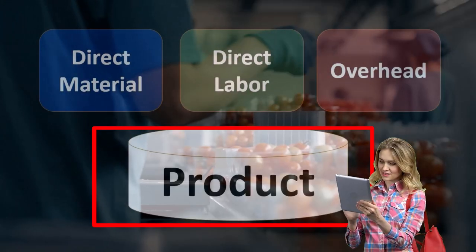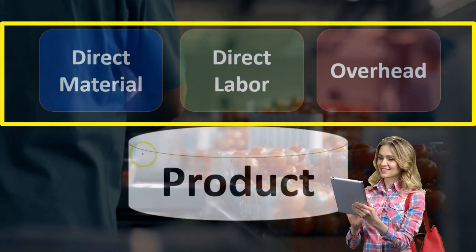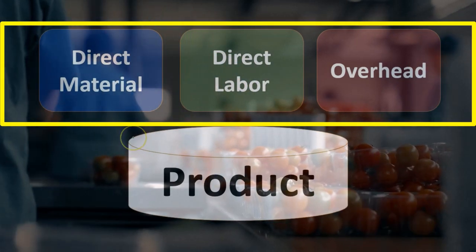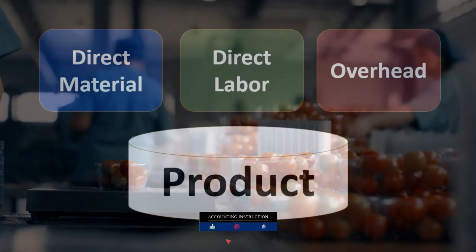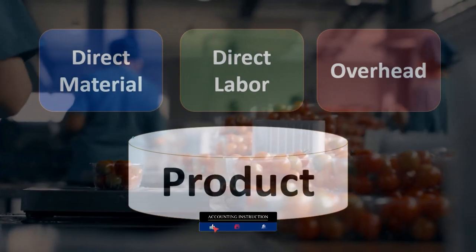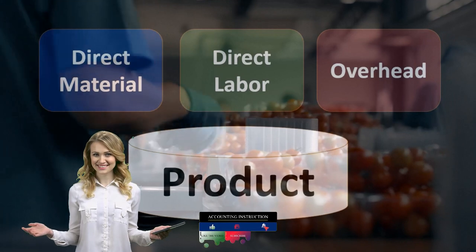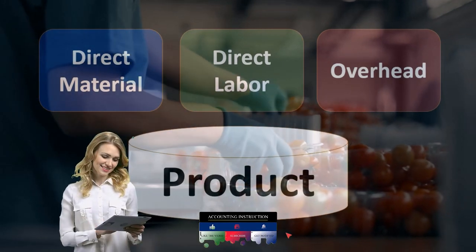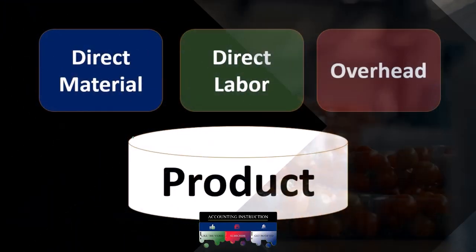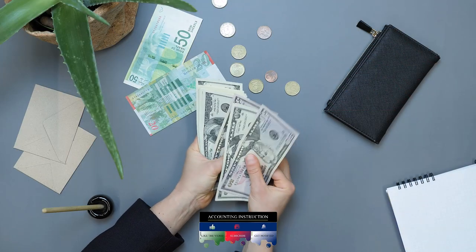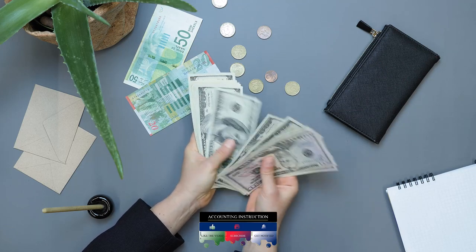When considering production costs, we always think about direct materials, direct labor, and overhead. This should always come to mind when we think about production. Anytime we think about inventory, whether we make it or whether it be made someplace else, its costs include the direct materials, direct labor, and overhead.